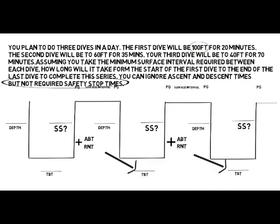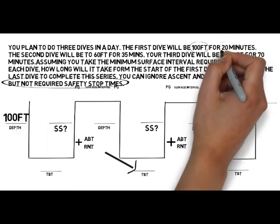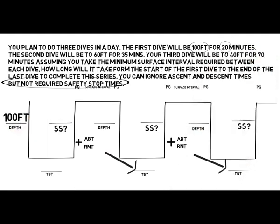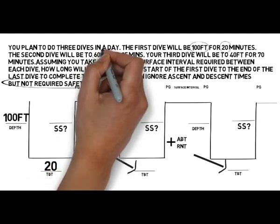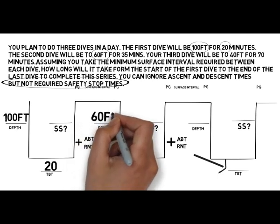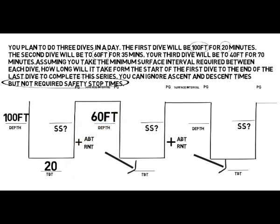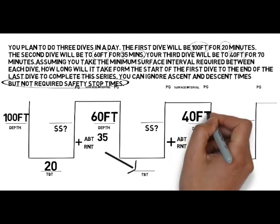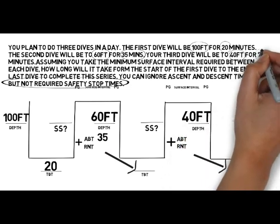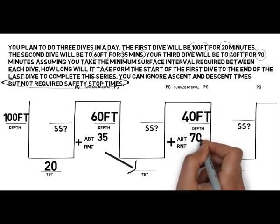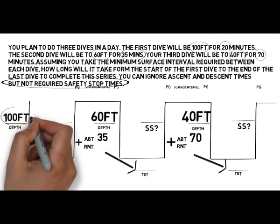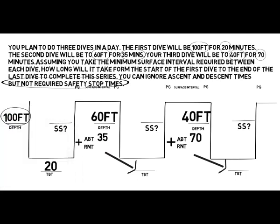Now we can enter in the depths and times from the question. The first dive is 100 feet for 20 minutes. The second dive is 60 feet for 35 minutes — making sure we put the 35 minutes next to actual bottom time. Then 40 feet for the third dive, and again next to actual bottom time we put 70 minutes. Now we've got all the information from the question and can start working it.